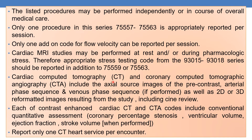Cardiac computed tomography and coronary computed tomographic angiography — CT and CTA — include axial source images of the pre-contrast, arterial phase, and venous phase sequences if performed, as well as 2D or 3D images resulting from the study including sign review. These elements are included in each contrast-enhanced cardiac CT and CTA code. They include conventional quantitative assessment which may include coronary percentage of stenosis, ventricular volume, ejection fraction, and stroke volume whenever performed. One more important point: report only one CT heart service per encounter.